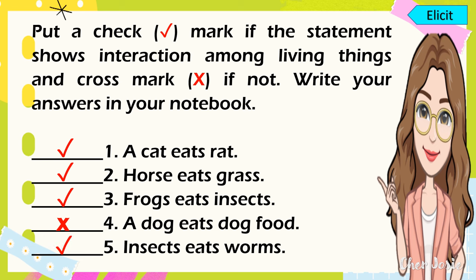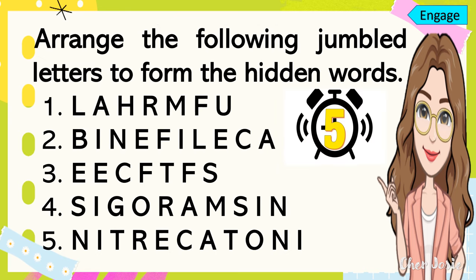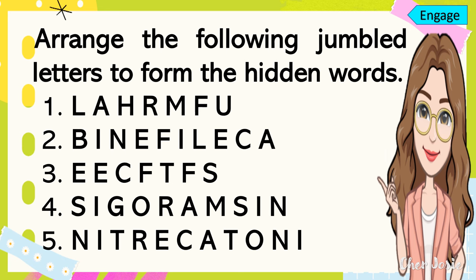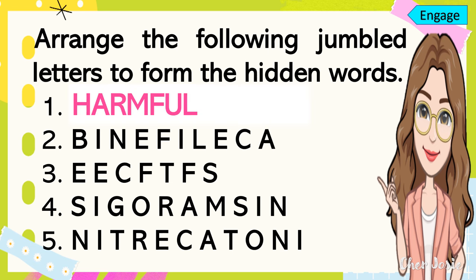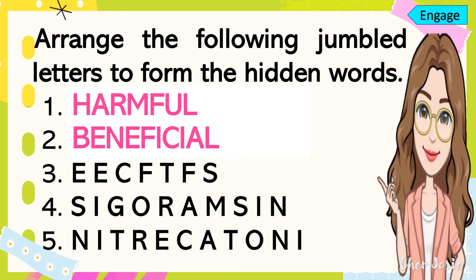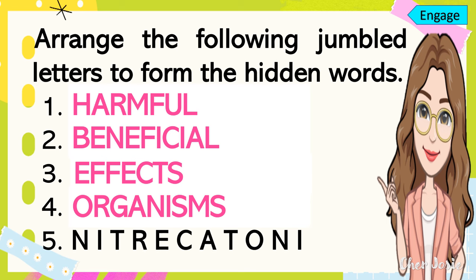I do hope you got a perfect score. Another brain twister — please arrange the following jumbled letters to form the hidden words. The correct answers are: number 1, harmful; number 2, beneficial; number 3, effects; number 4, organisms; and number 5, interaction.